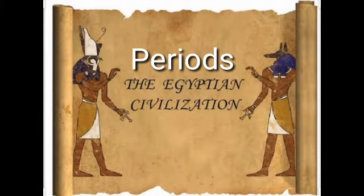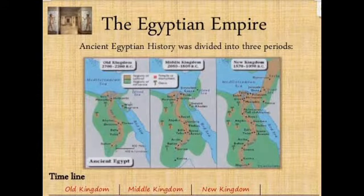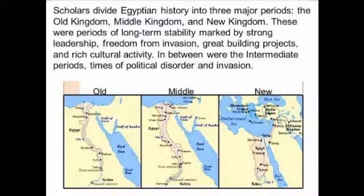The history of ancient Egypt can be divided into three periods. Historians differ in their opinion regarding the timespans of these three periods. These three periods are the Old Kingdom, the Middle Kingdom, and the New Kingdom.